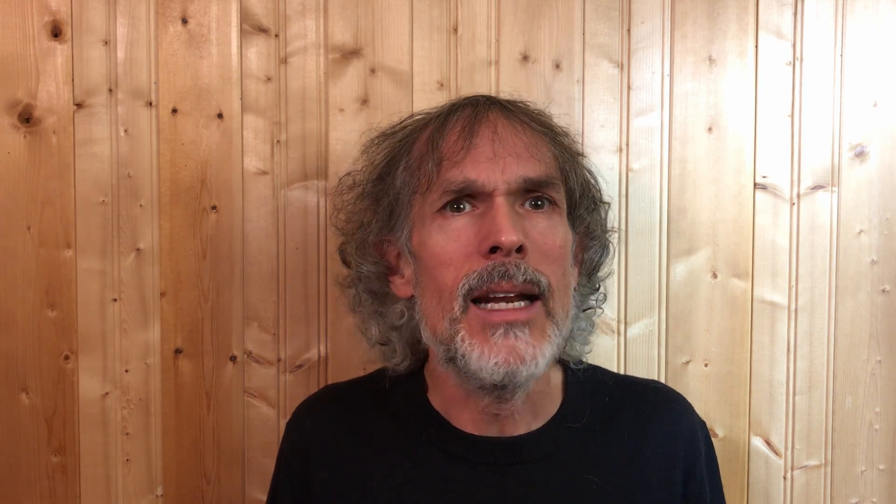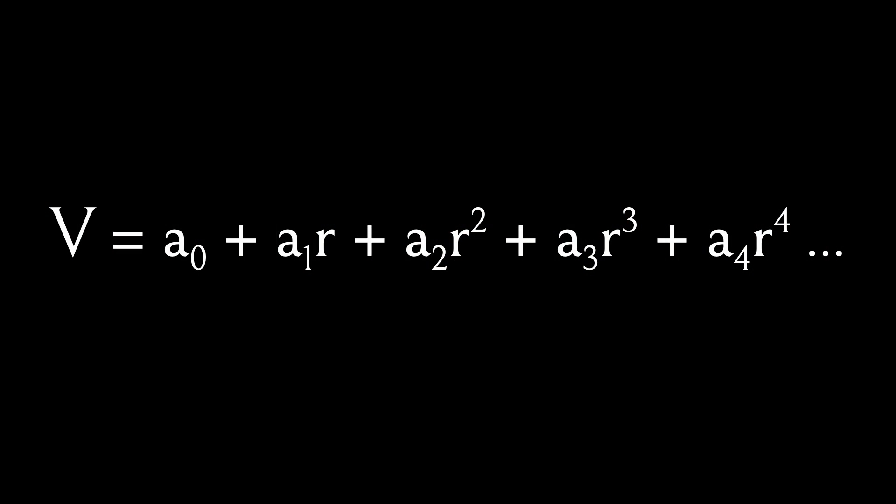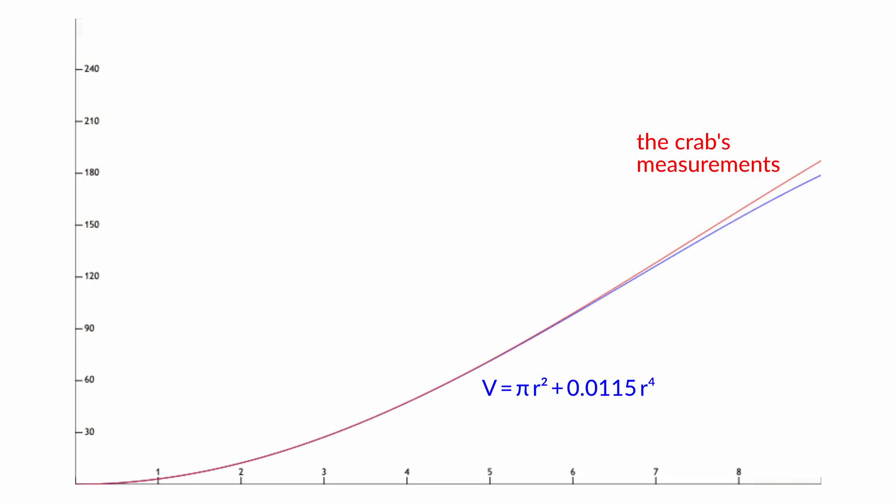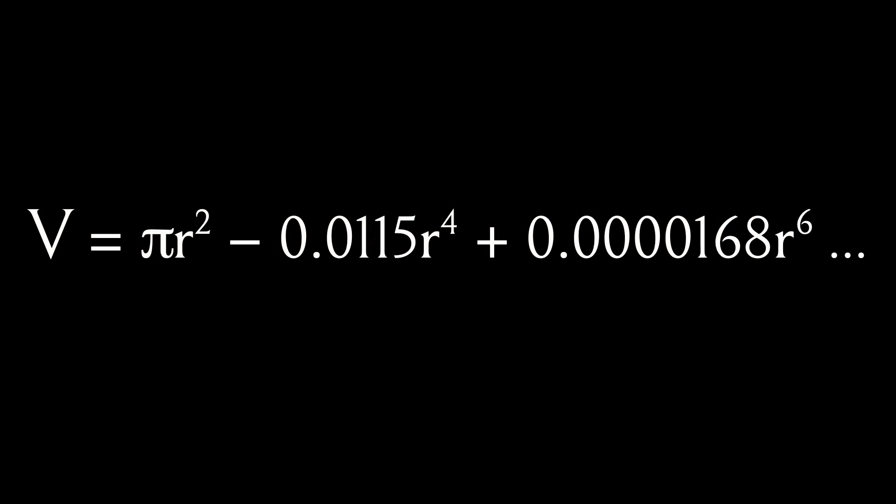But our crab is nothing if not persistent. If the formula that fits the measurements isn't r², or r¹, or r³, or even r to the power of 1.9, then some combination of powers — r¹, r², r³, r⁴, and so on — must work. So the crab does a polynomial analysis and finds that a formula with just two terms, π r², with a small r⁴ correction, fits its measurements much better. Add one more term — a tiny r⁶ correction — and the fit is pretty precise. Finally, the crab has its formula: v = π r² − 0.0115 r⁴ + 0.0000168 r⁶.